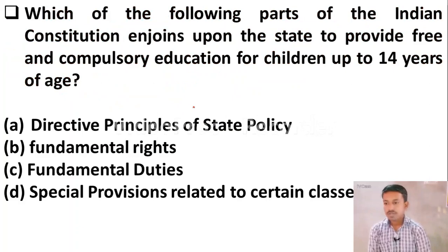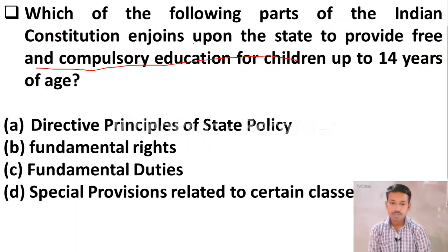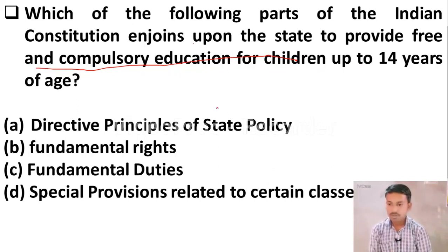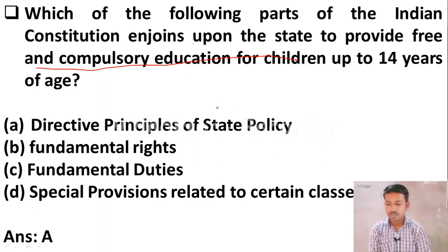Next question: Which of the following parts of the Indian Constitution enjoins upon the state to provide free and compulsory education for children up to 14 years? Option A: Directive Principles of State Policy. Option B: Fundamental Rights. Option C: Fundamental Duties. Option D: Special provisions related to certain classes. The right answer is Option A — Directive Principles of State Policy.